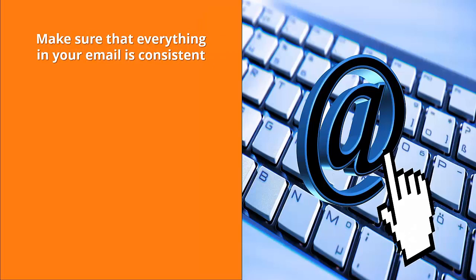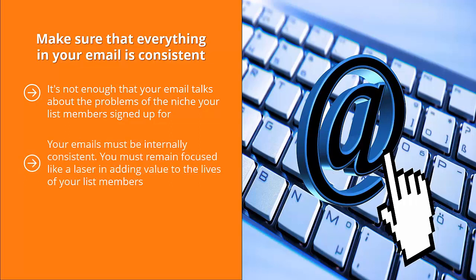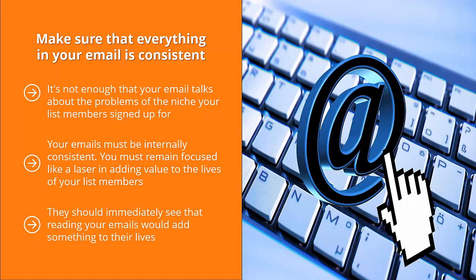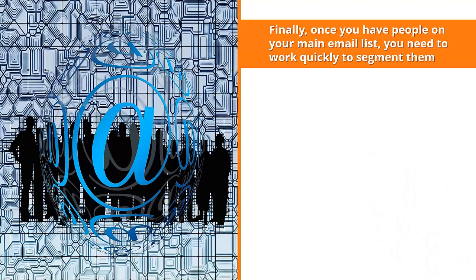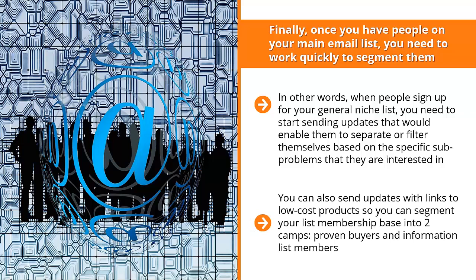Make sure that everything in your email is internally consistent. It's not enough that your email talks about the problems of the niche — you must remain focused like a laser on adding value to the lives of your list members. They should immediately see that reading your emails adds something to their lives. Finally, once you have people on your main email list, work quickly to segment them. Send updates that enable subscribers to filter themselves based on the specific sub-problems they're interested in. You can also segment your list into proven buyers and information list members, then spend more time converting proven buyers to purchase higher-dollar items.